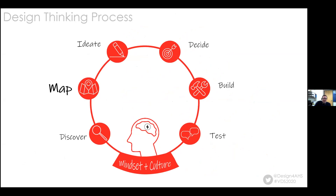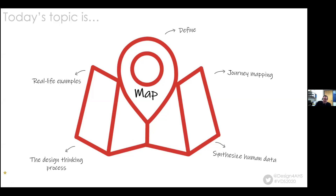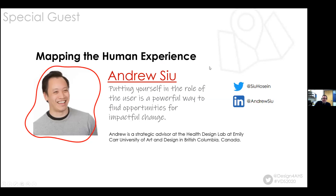We're talking about mapping today. We've already talked about understanding your user — that discover, empathy piece. Now the next thing is to map. When we hear 'map' we immediately think process maps, swim lane maps — but today's topic is journey mapping or experience mapping. It's about using real-life examples and synthesizing all of that human data. Instead of looking at it from the healthcare system side, this is all about the patient journey — how do they walk through it?